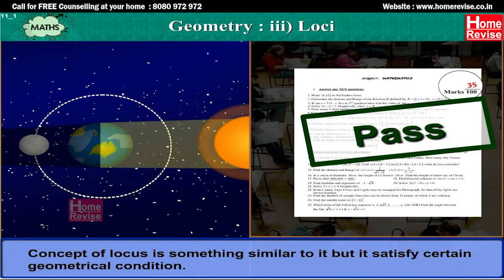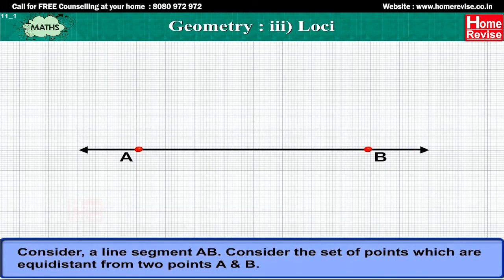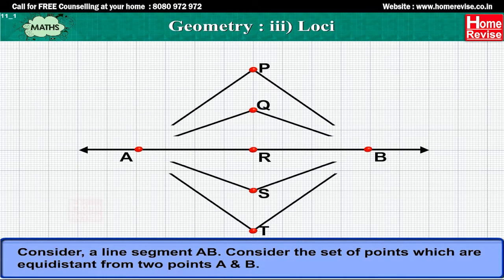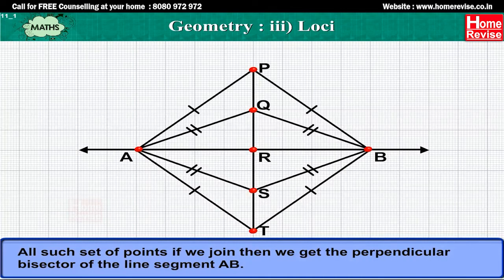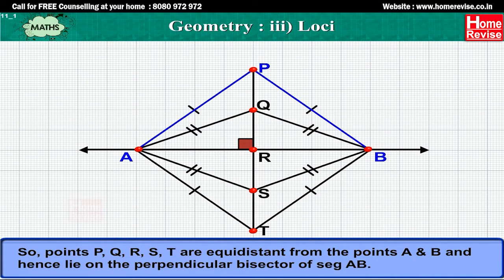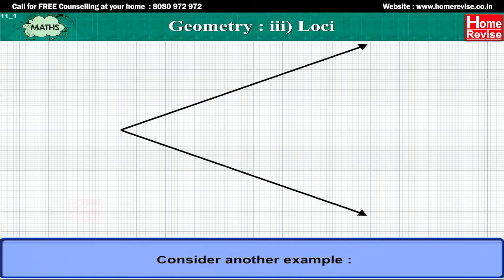Locus satisfies certain geometrical conditions. Consider a line segment AB and the set of points which are equidistant from two points A and B. All such points, if we join them, give us the perpendicular bisector of the line segment AB. So points P, Q, R, S, T are equidistant from A and B and hence lie on the perpendicular bisector of segment AB.